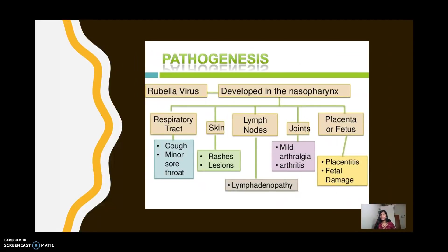This is the pathogenesis of the disease, summarizing everything explained so far. The rubella virus develops in the nasopharynx and goes through the respiratory tract, which you can see through symptoms like coughs and minor sore throats. When you see rashes or lesions, the virus is affecting the skin; swelling of the lymph nodes indicates lymphadenopathy. Arthritis or aching pain in the joints indicates the virus has reached the joints. When the virus transplacentally moves on to the fetus, it has much more severe consequences — fetal damage, mental or growth retardation, and the other effects mentioned earlier.